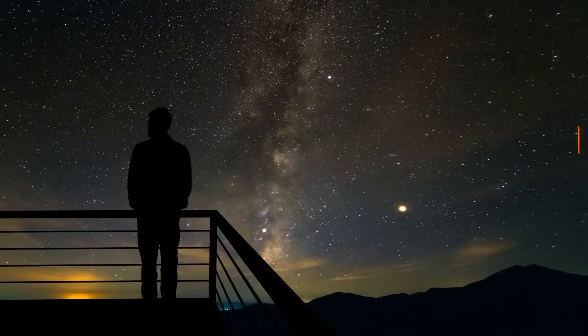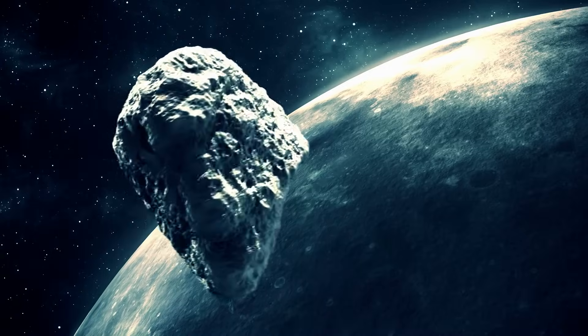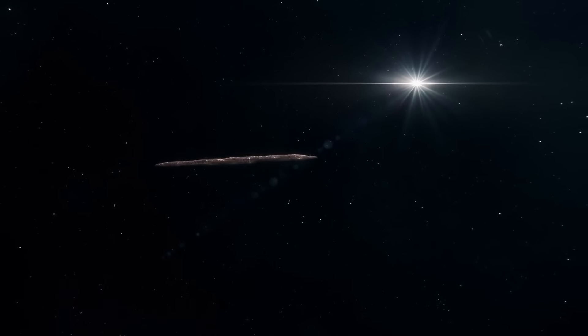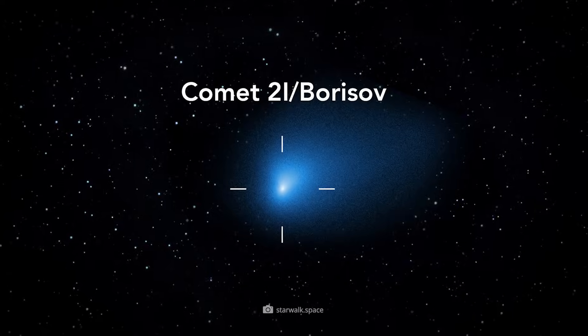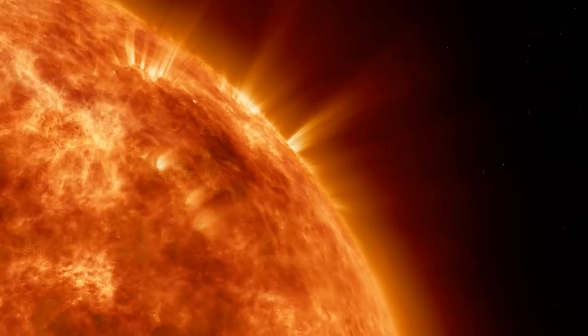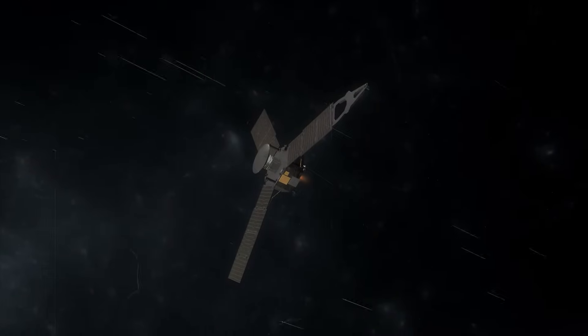Added to this is a speed that breaks all previous records. Even at the time of its discovery, 3i Atlas was moving at around 60 kilometers per second. By comparison, Oumuamua was traveling at 26 kilometers per second and 2i Borisov at 32 kilometers per second. At its closest point to the sun, the perihelion at the end of October 2025, the comet will even accelerate to 70 kilometers per second, faster than any space probe ever built by humankind.